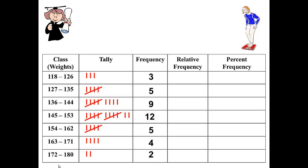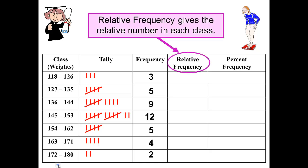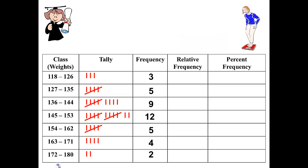And we want to find the relative frequency. And the relative frequency gives the relative number in each class. In other words, it compares by division the number or frequency in the class to the total number and expresses that number as a decimal. It's much easier to show than to say, especially since I seem to be tongue-tied today as I'm recording this.